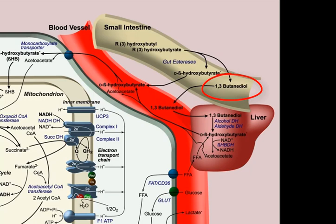Both of these molecules are absorbed in the small intestine and then into the liver. The liver has an enzyme, alcohol dehydrogenase, that converts 1,3-butanediol into D-beta-hydroxybutyrate.